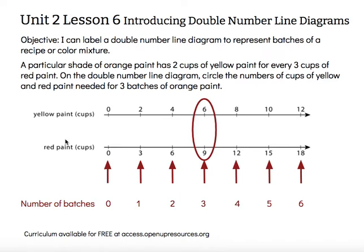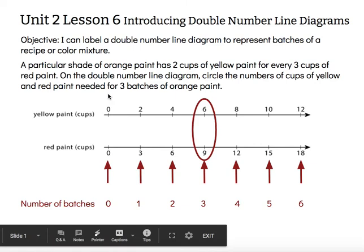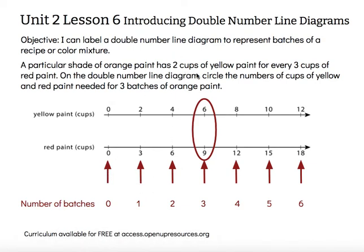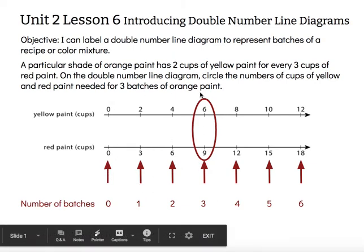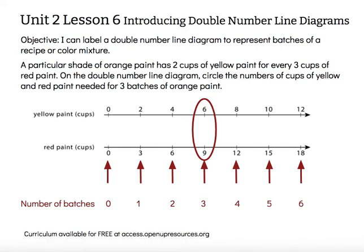The objective says I can label a double number line diagram to represent batches of a recipe or a color mixture. With batches, we're looking at that vertical relationship — each one of these vertical pairs represents an equivalent ratio for the original mixture recipe. Thanks for watching.